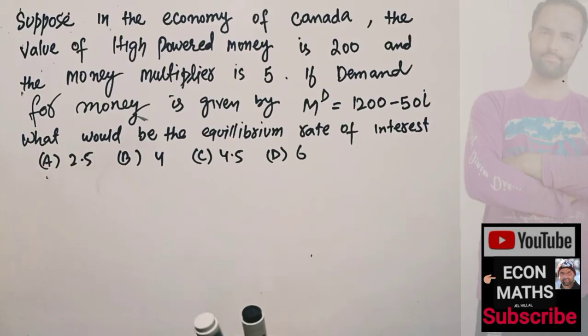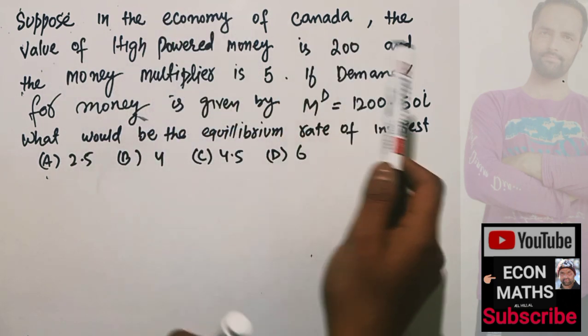In this video, we will solve a numerical problem on how to calculate equilibrium rate of interest from the given money multiplier, money demand function, and high powered money. The question is: suppose in the economy of Canada...